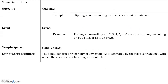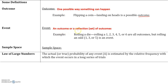An outcome is one possible way that something can happen. For example, if you flip a coin, landing on heads is a possible outcome, and landing on tails would be another outcome. An event is an outcome or a collection or set of outcomes. For example, if you roll a die, rolling a 1, 2, 3, 4, 5, or 6 are all outcomes. But rolling an odd — such as a 1, 3, or 5 — that's an event, because rolling an odd is a collection of outcomes.